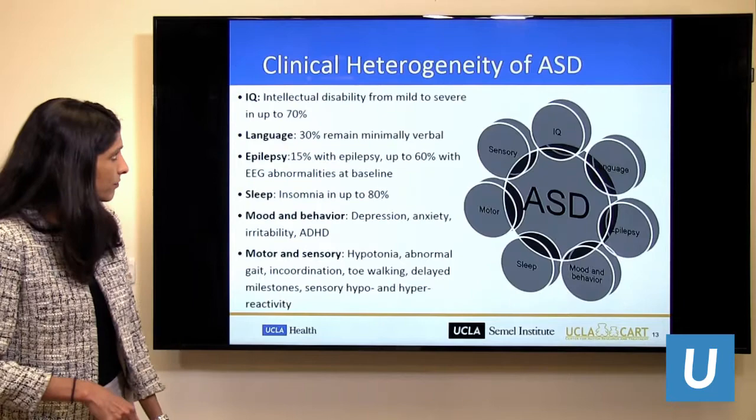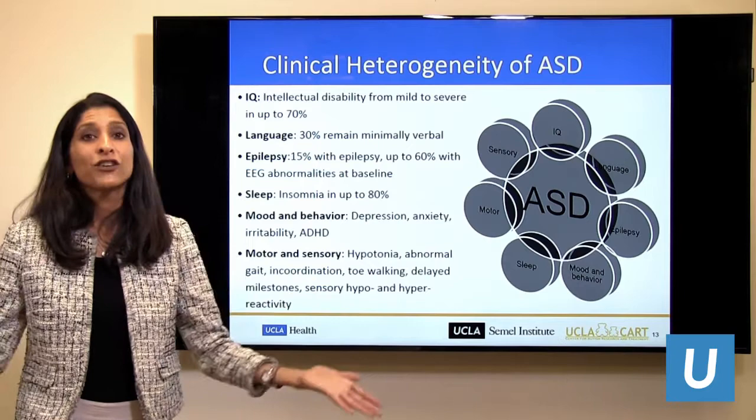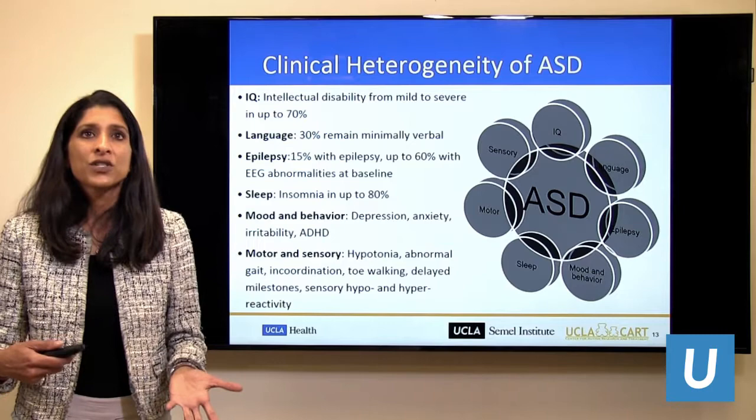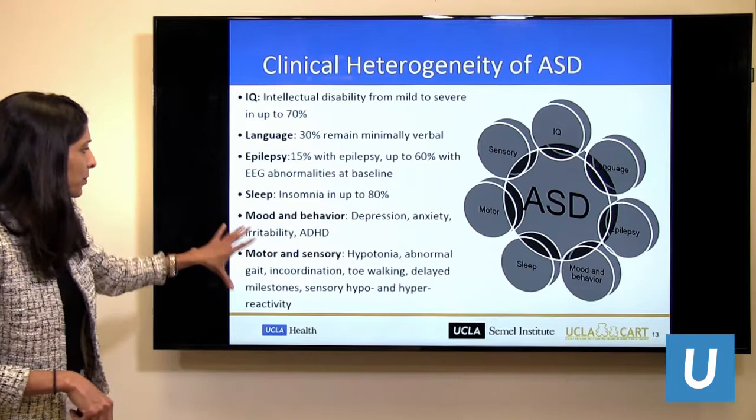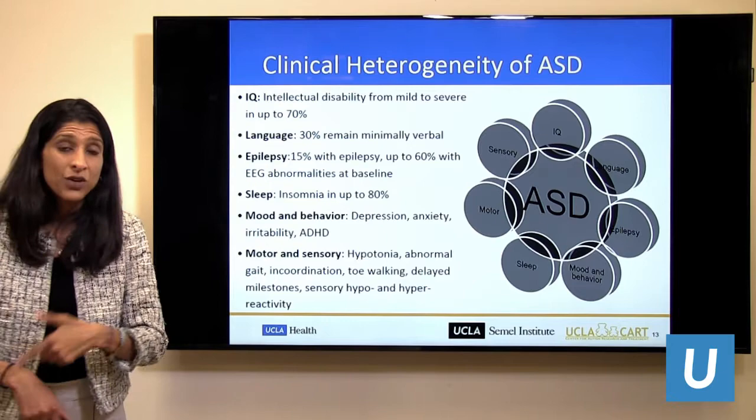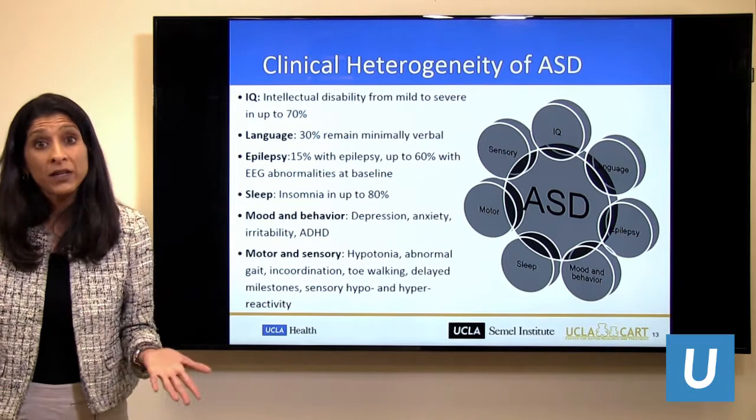There's a lot of heterogeneity or variability in autism, and tremendous research is being done to understand why. We see considerable variability in cognitive function and language — a third of children with autism never gain language, while another subset has quite a bit of language. The types of interventions needed will vary based on each child's needs.